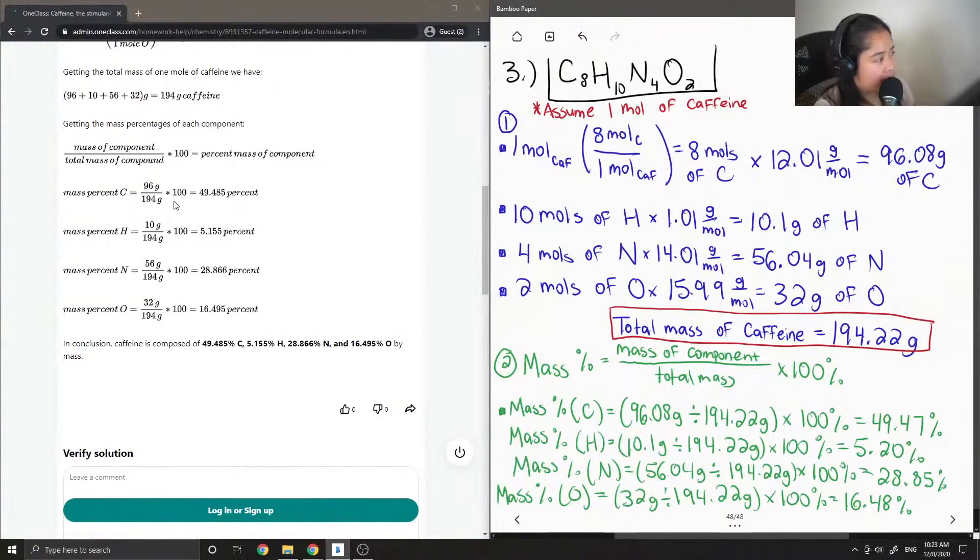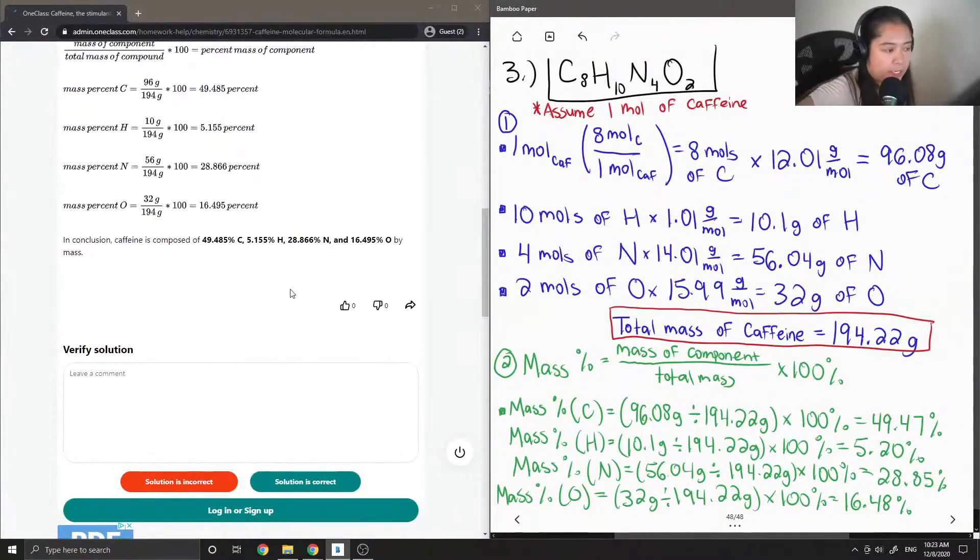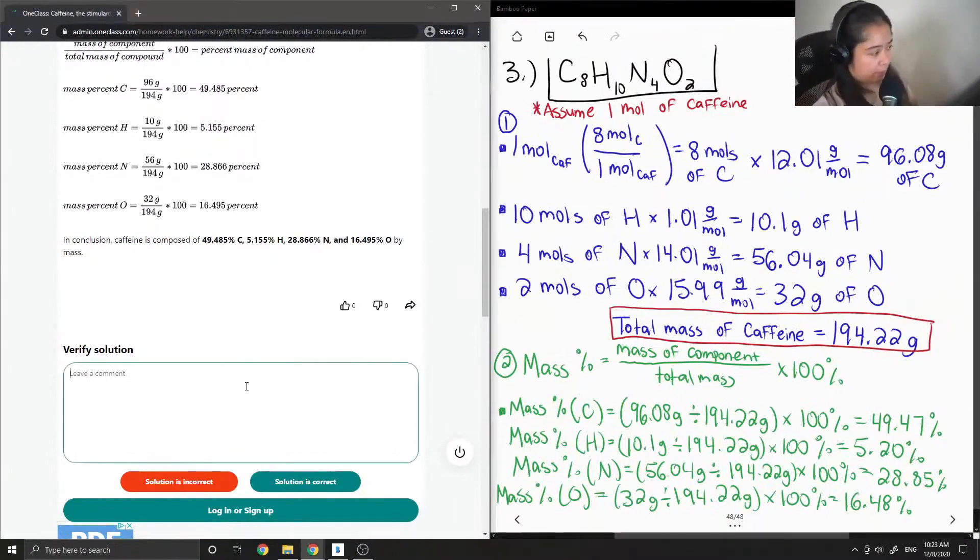So for carbon, 96 divided by 194 times 100 gives us 49.485%. For hydrogen, around 5.155, nitrogen 28.866, and oxygen 16.495. Yep, so pretty much the same as what I got as well. So this solution is correct.